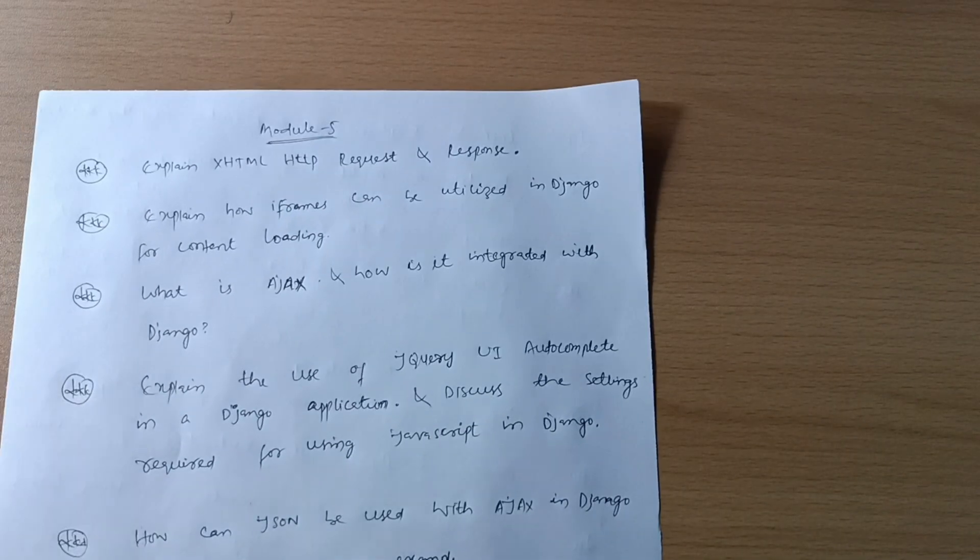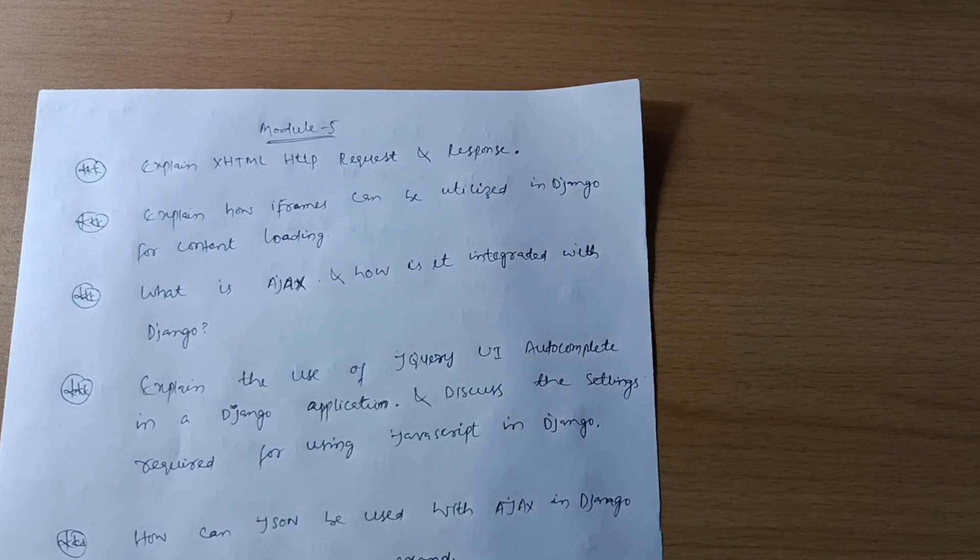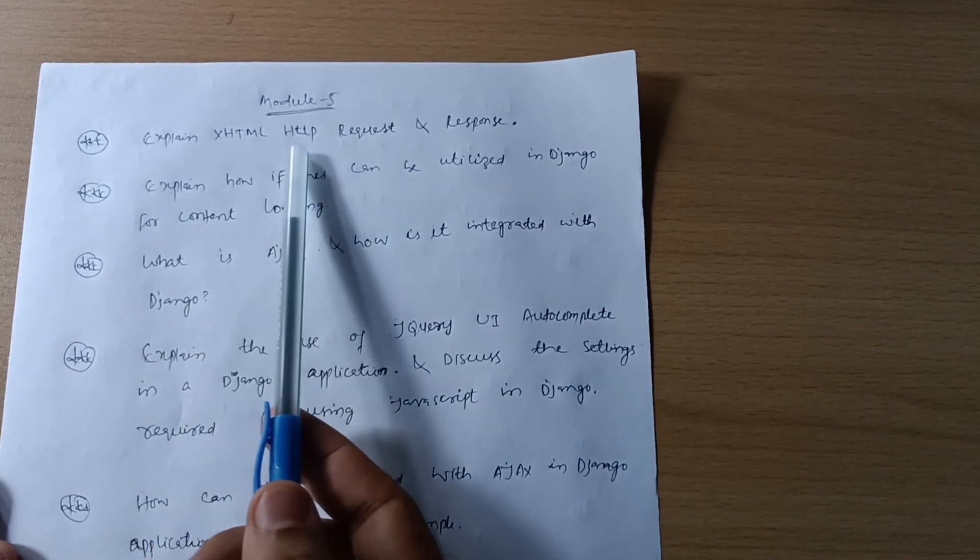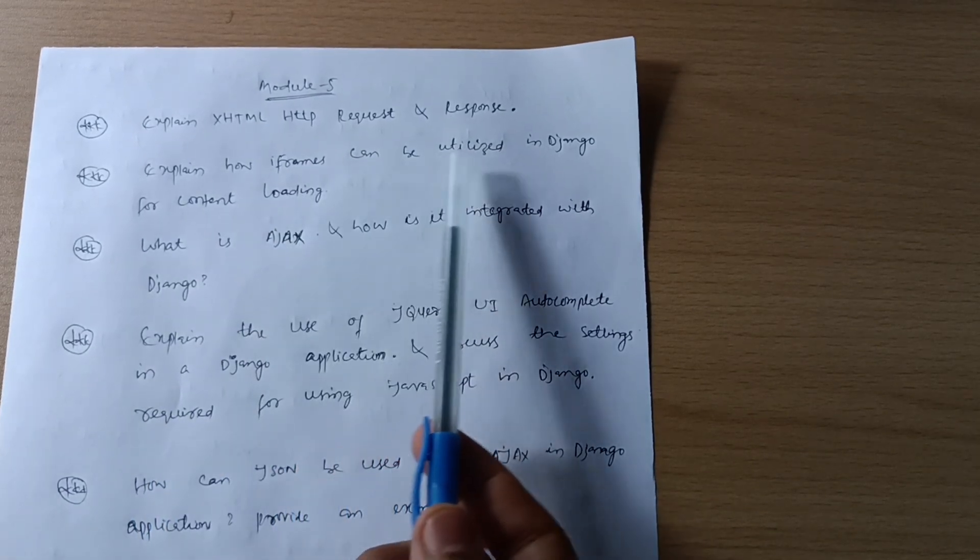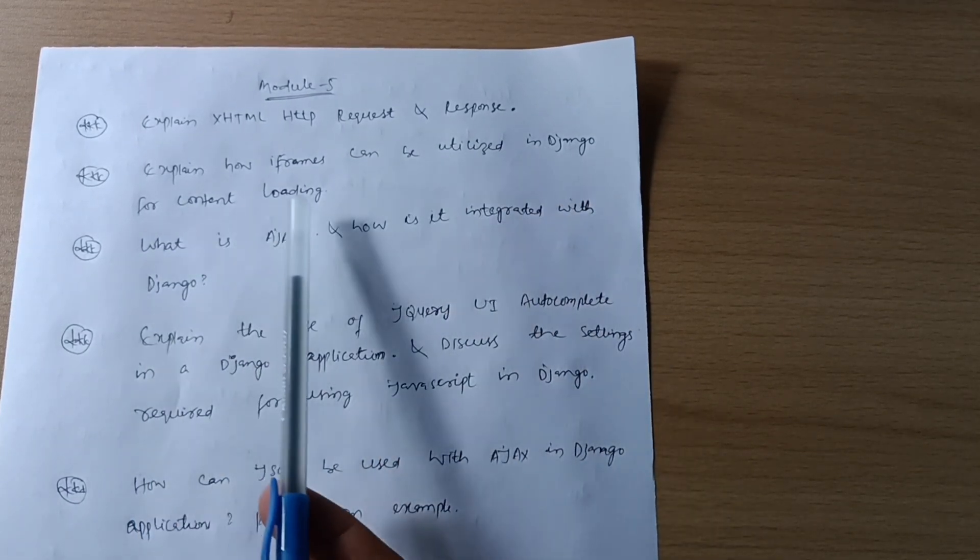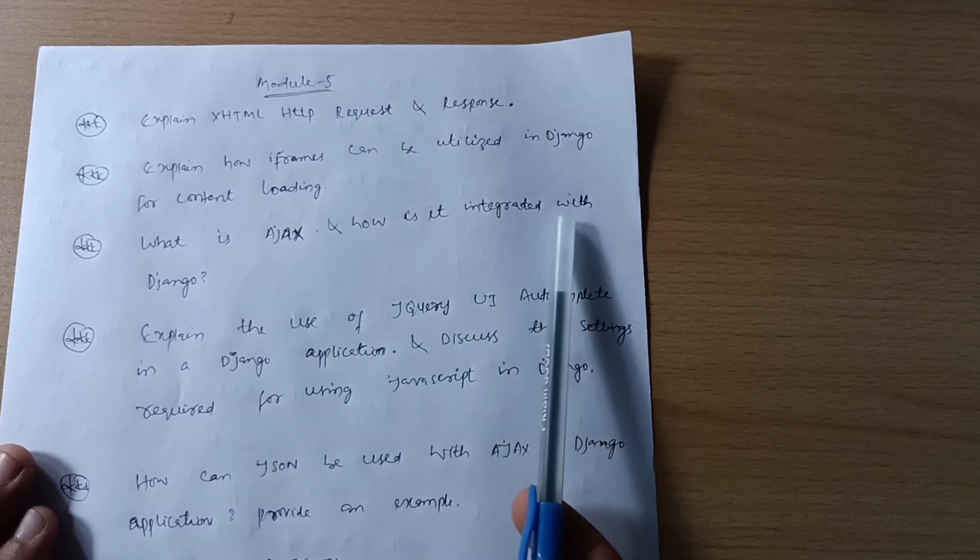Next is the last module, Module 5, where you have to cover six questions. Explain XHTML, HTTP request and response. Explain how iframes can be utilized in Django for content loading. What is AJAX and how is it integrated with Django?